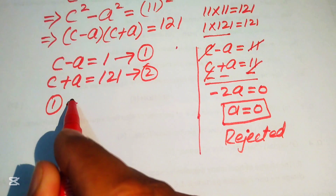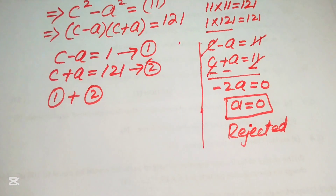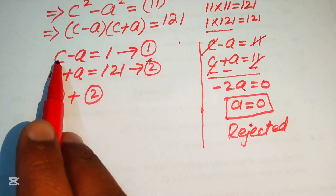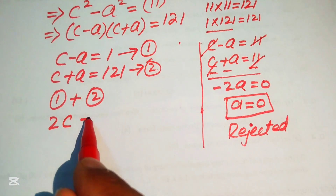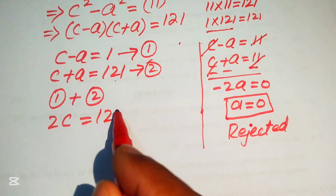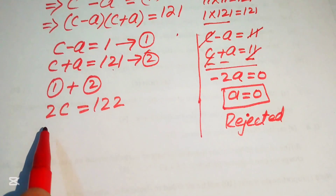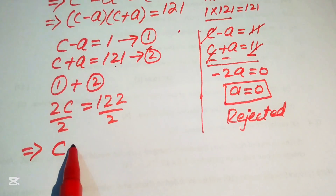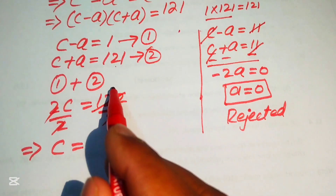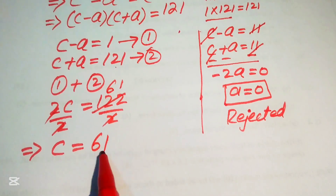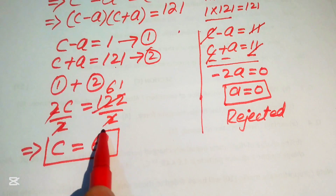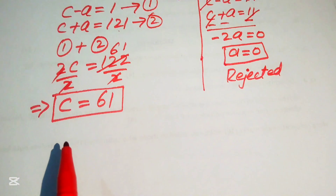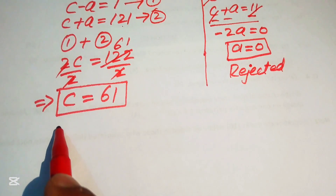For the first case, we add equation 1 and equation 2. The a terms cancel: c + c = 2c, and 1 + 121 = 122. Dividing both sides by 2 gives c = 61.